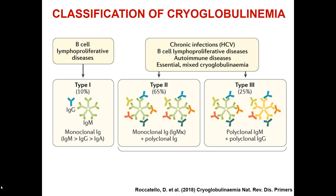The classification of cryoglobulinemia is based on the type of cryoprecipitable immunoglobulin. There are three main subgroups. Type 1 is associated with B cell proliferative diseases, and patient serum contains a monoclonal immunoglobulin, most often IgM. Type 2 mixed cryoglobulinemia comprises serum immune complexes formed of monoclonal IgM that are kappa-restricted and polyclonal IgG. Type 3 mixed cryoglobulinemia comprises serum complexes formed by both IgM and IgG, both polyclonal.